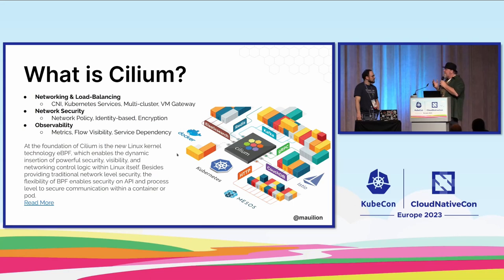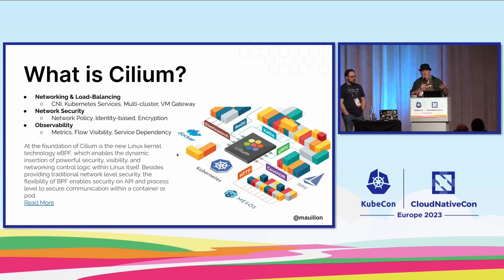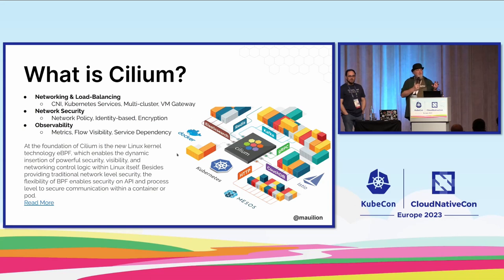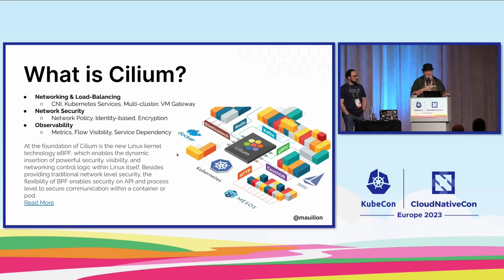One of the big takeaways — all of you who have heard of eBPF have probably heard of it in the context of observability. The idea that you could implement eBPF to get more information about what's happening. If you look at things like Pixie or our own Tetragon or Hubble observability, there's a ton of context that eBPF can give you because it has a view of what's happening at the kernel layer. Observability is a first-class use case in everything we've built, whether it's Cilium the CNI or Tetragon.